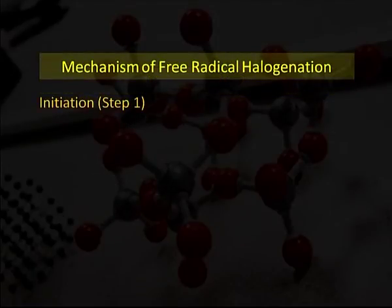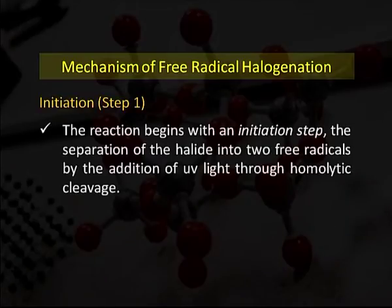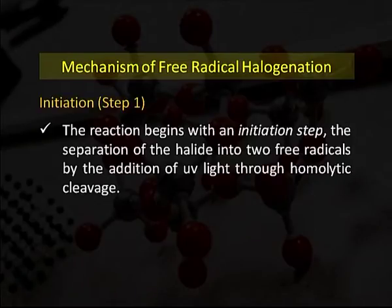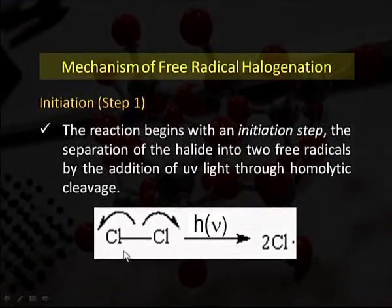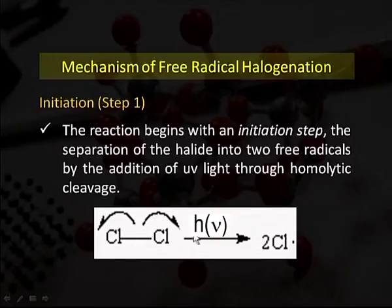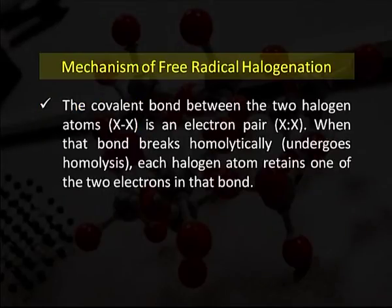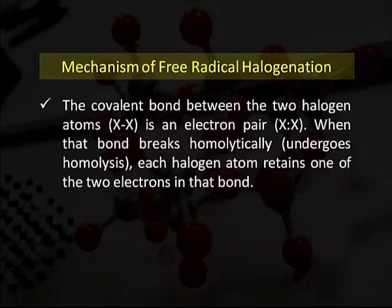First, we will discuss the mechanism of free radical halogenation — that is, initiation. The reaction begins with an initiation step: the separation of the halide into two free radicals by the addition of UV light through homolytic cleavage. The chlorine molecule, made up by a covalent bond sharing two electrons of the outermost orbit, gets cleaved using light, and two chloride free radicals are obtained. When the covalent bond undergoes homolysis, each atom retains one of the two electrons in that bond.